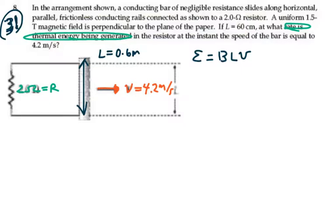Alright, so BLV. Our magnetic field is 1.5 Tesla, L is 0.6 meters, velocity is 4.2 meters per second. So our voltage is 3.78 volts for our EMF.